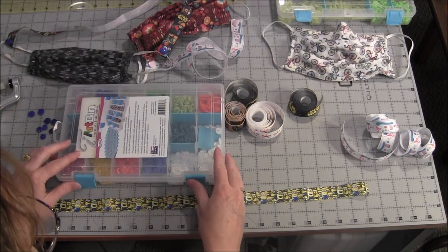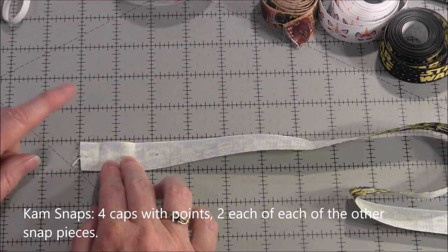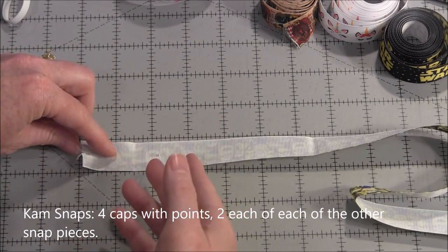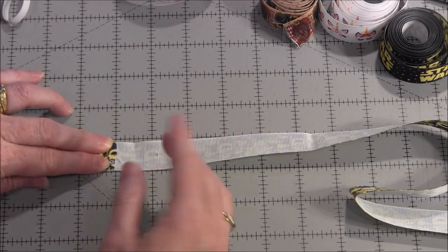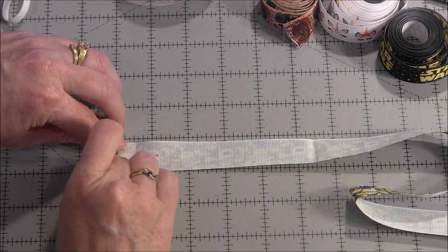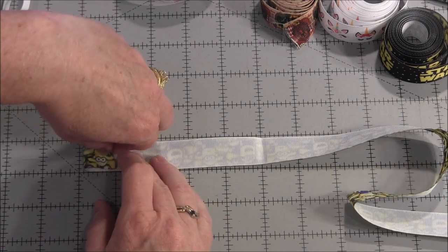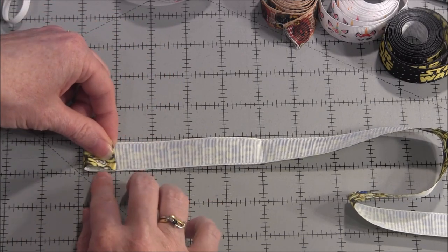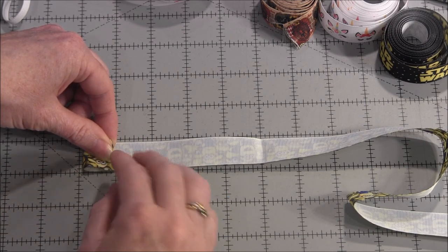To start, we take the ribbon facing front side down, fold it up a half inch approximately, and then fold it up a whole inch. I have a half inch underneath so the edge of the ribbon is tucked underneath and won't fray, and then I have it folded over one inch.